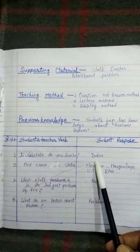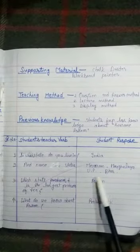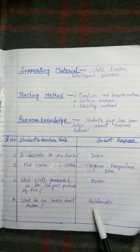Then answer. First question, India. Second, Mizoram, Meghalaya, UP, Bihar. Third, Assam. And fourth, problematic.